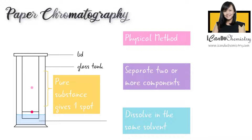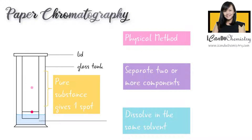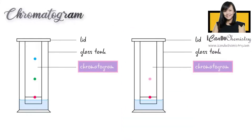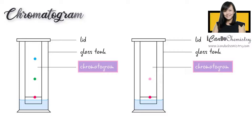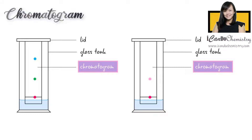A pure substance gives only one spot on a chromatogram. So what is a chromatogram? A chromatogram is the result of chromatography, showing us the separate components of a sample.